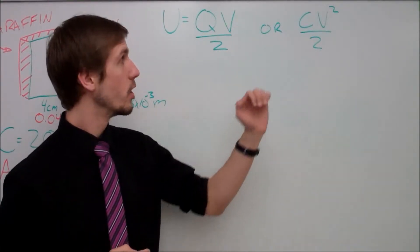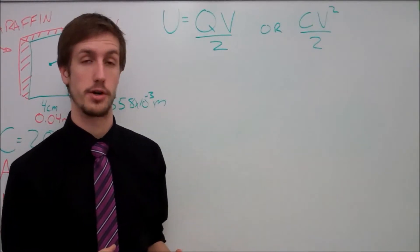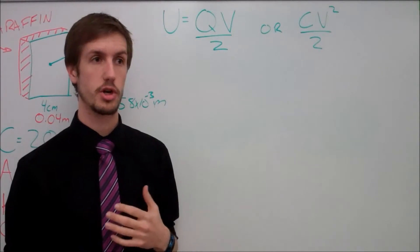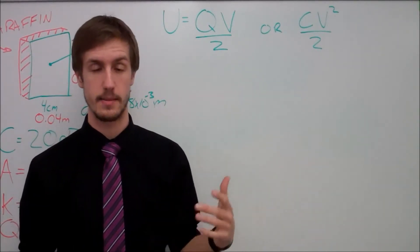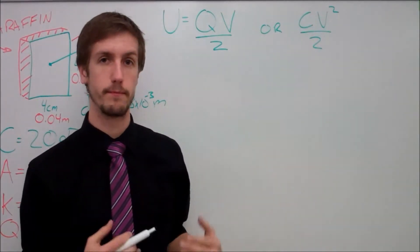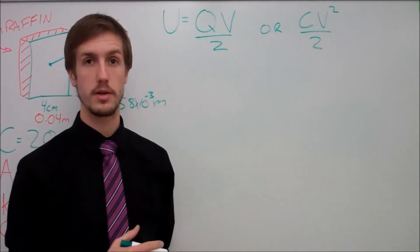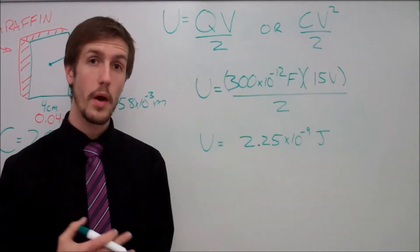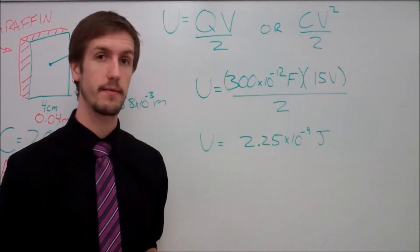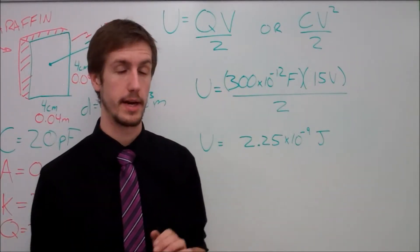Where we have charge times voltage divided by 2, or again, like I said earlier in a video where sometimes we don't want to use charge, we weren't given charge. So we ended up rearranging an earlier formula in order for us to get charge by itself and we got capacitance times voltage. And we put that right into this formula so we get capacitance multiplied by voltage squared over 2. And I don't care which one you use, but the one I'm going to use is the QV, where now I have found that this potential energy of my capacitor is 2.25 times 10 to the negative 9th joules or 2.25 nanojoules of energy.